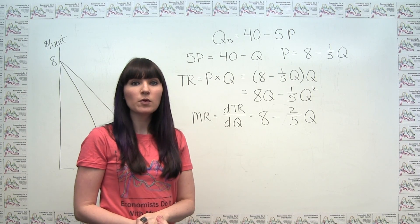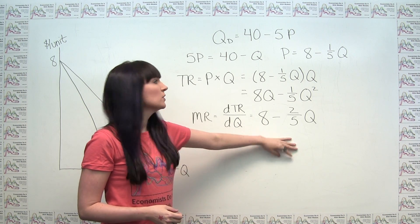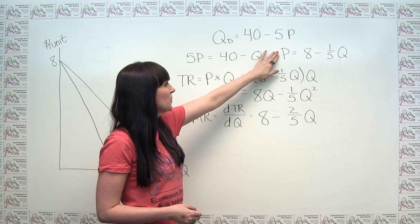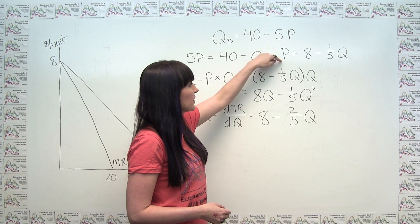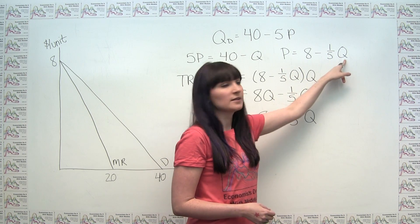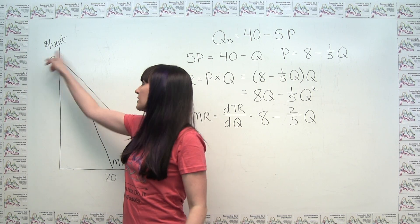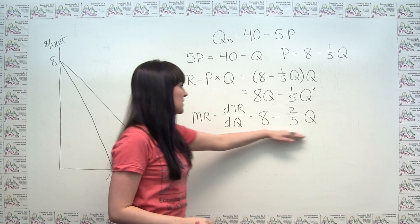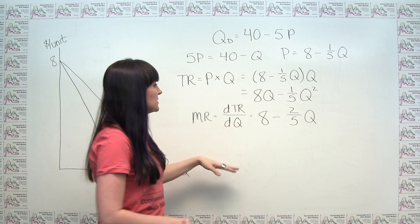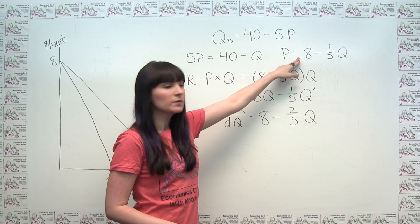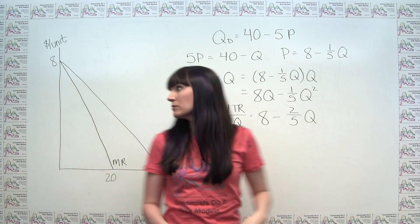Coming back to the original point that the marginal revenue curve looks like the demand curve but is twice as steep, we can actually see why that is. Comparing the inverse demand curve to the marginal revenue curve, both have the dependent variable — price or marginal revenue — as a function of quantity. And we can see they both hit the vertical axis at the same point: plugging in zero for quantity gives 8 in both cases.